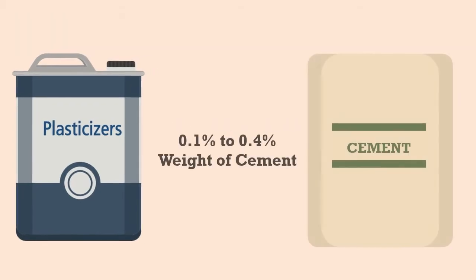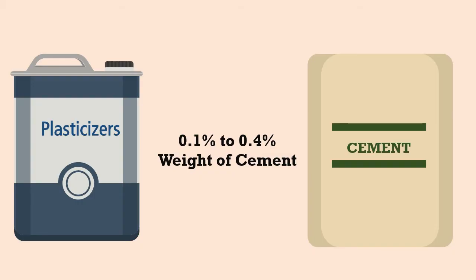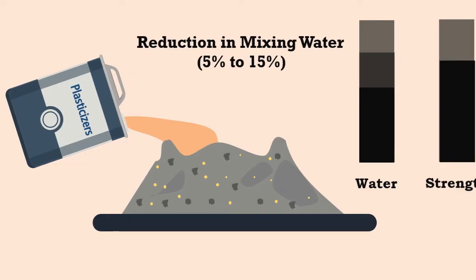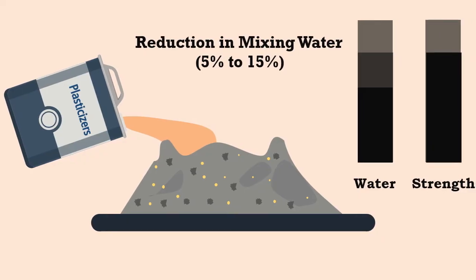Plasticizers are used in the amount of 0.1 to 0.4 by weight of cement. At these doses, at constant workability, the reduction in mix water is expected to be of the order of 5 to 15%. This naturally increases the strength.